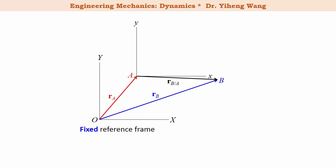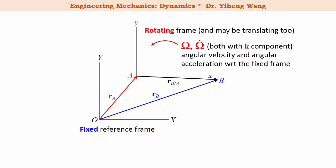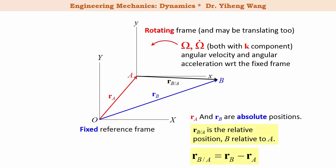Now let's revisit this scenario, and for simplicity, let's focus on a 2D plane only. This time, the moving coordinate system represented by the lowercase letters x and y is rotating with angular velocity omega and angular acceleration omega-dot with respect to the fixed frame. Notice that the moving frame could be translating at the same time as well. The origin of this frame is at point A and is moving with point A. R_A and R_B are still the absolute position vectors of points A and B measured from the fixed frame, and the difference is still the relative position vector of B relative to A.